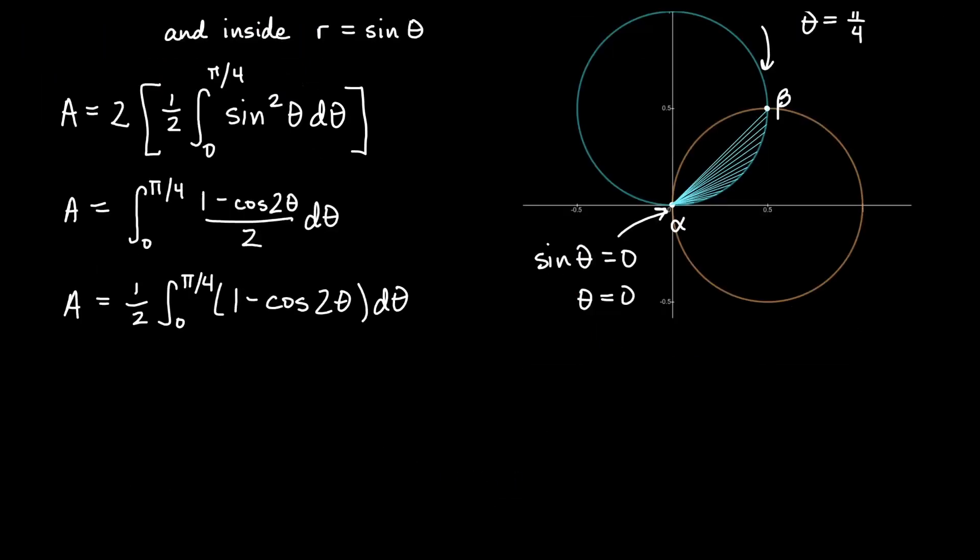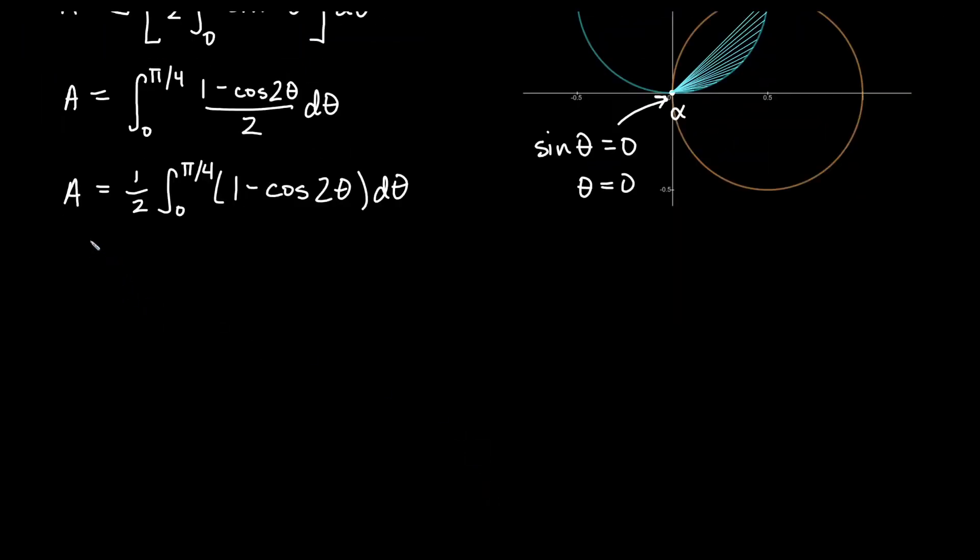Okay let's do our integrating now. We will get one half on the outside and integrating d theta if I integrate one I will get theta. Integrating cosine two theta I would get sine two theta and the reciprocal of two would come out so I'll get minus one half sine two theta. We will evaluate from zero to pi over four.